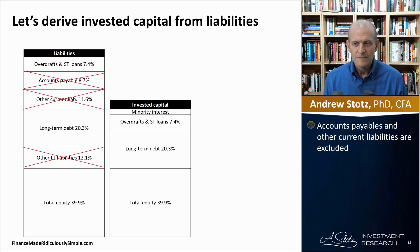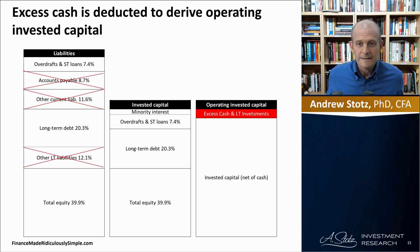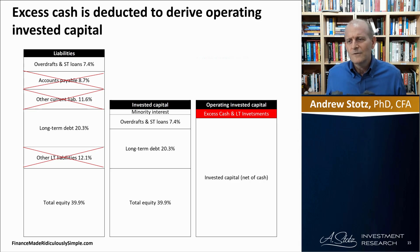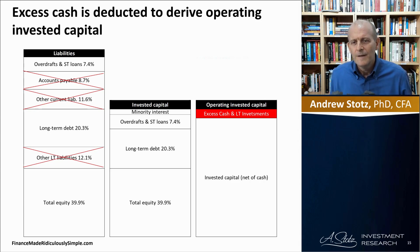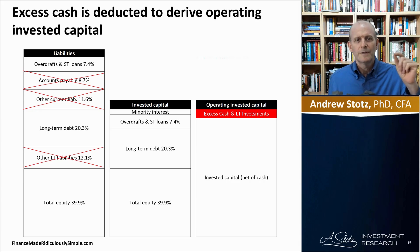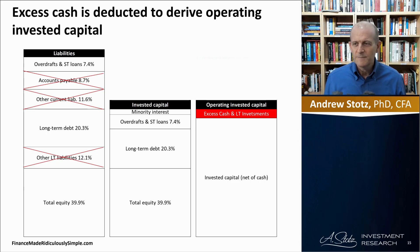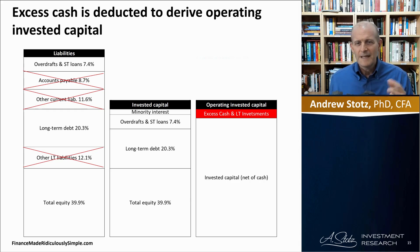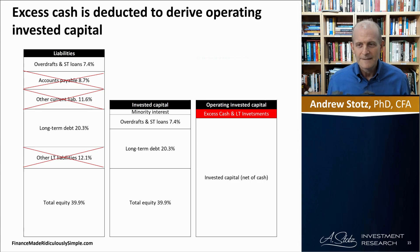Now, if a company has excess cash and investments in other companies, those investments aren't part of operations, so we don't want to include them. Excess cash simply could be used to reduce debt right away. For example, if a company borrows $100 million but has $100 million of excess cash, we could say the company has no debt, because they could immediately pay back that debt.